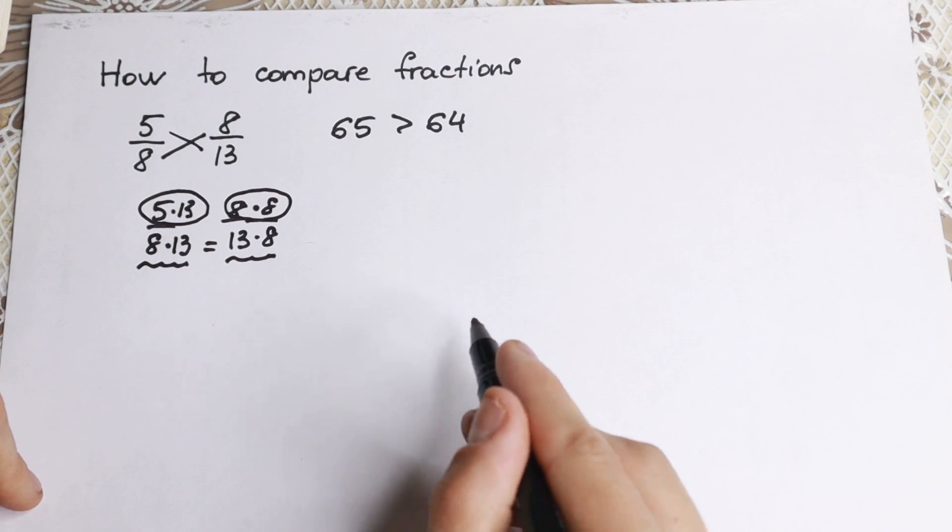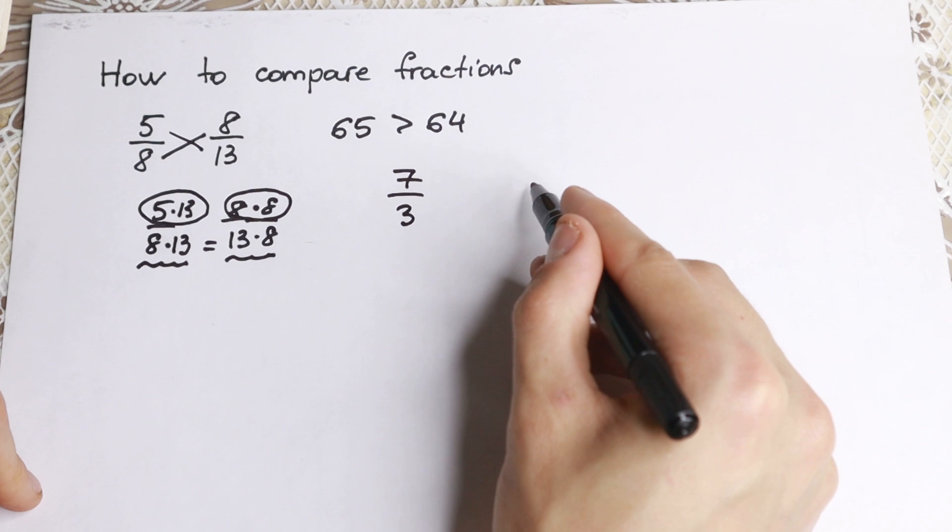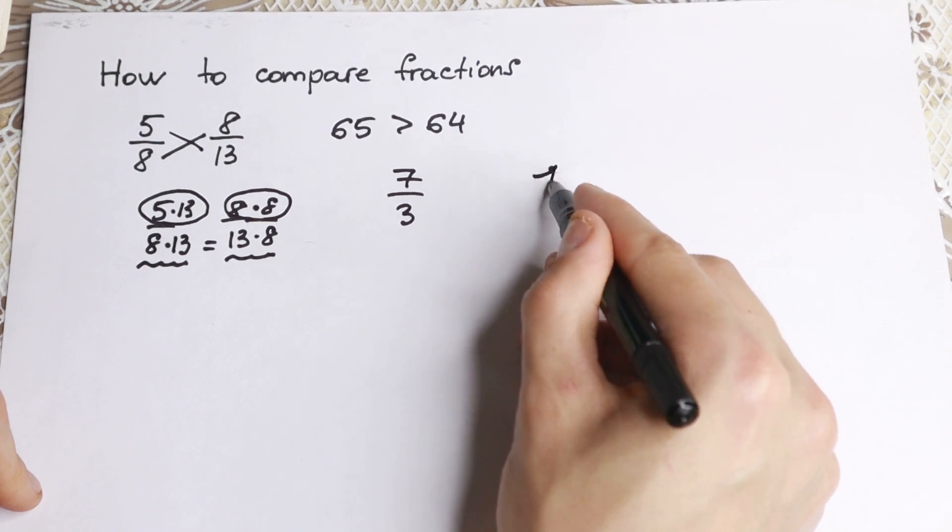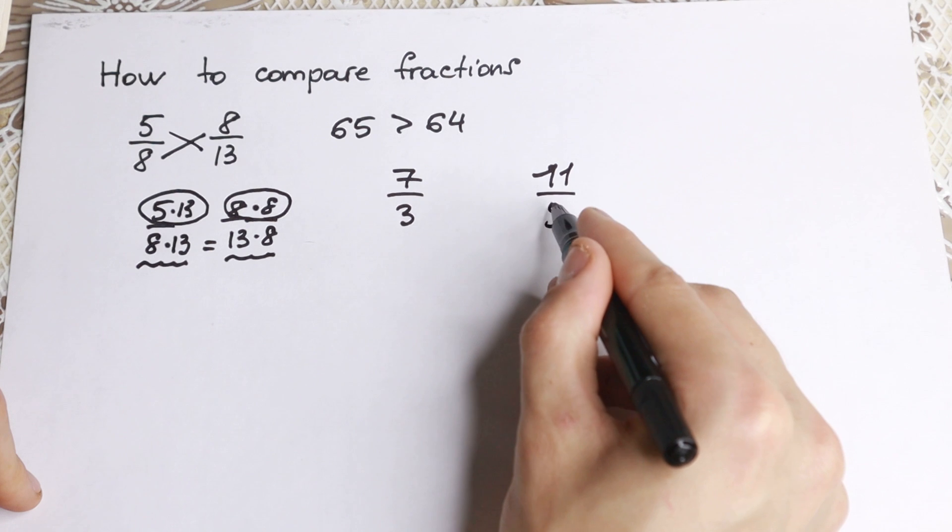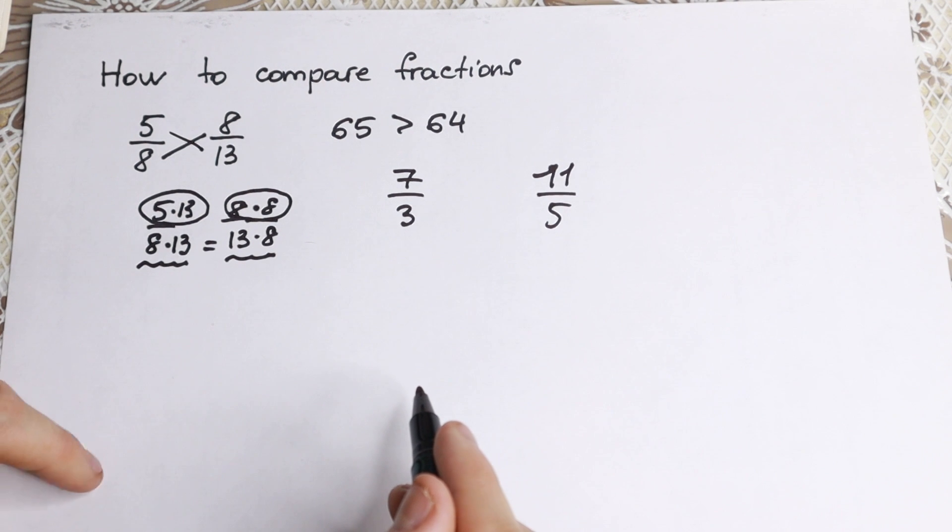Let's try to practice. For example, we have 7 over 3 and we have maybe 11 over 5. So we don't know exactly the value of these fractions, but how can we prove it? Let's use cross-multiplying.